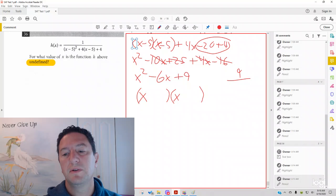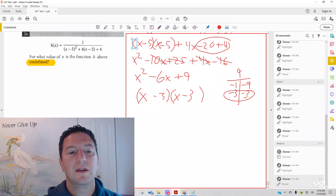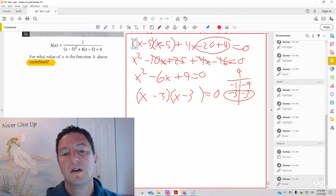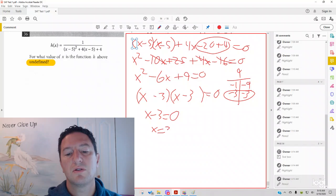And how can we split the 9? Negative 1, negative 9. That will give you negative 10 when you add it up. And then negative 3, negative 3. And that, sure enough, will give you negative 6. So it's minus 3, minus 3. And keep in mind, we're setting this equal to 0 to see what will make the bottom undefined. And at this point, you would set the parts equal to 0 if you don't see the answer already. So x is 3.